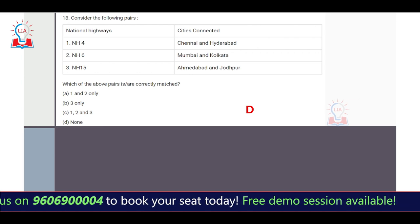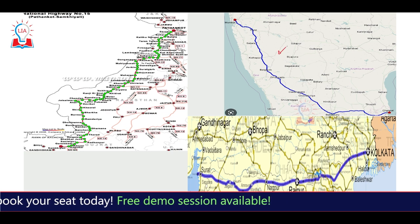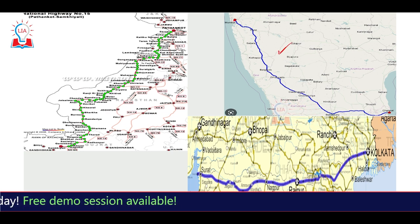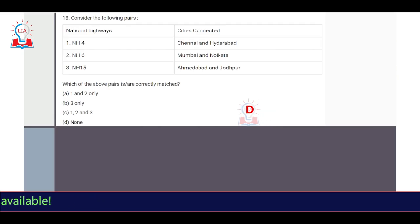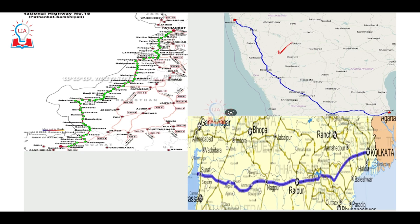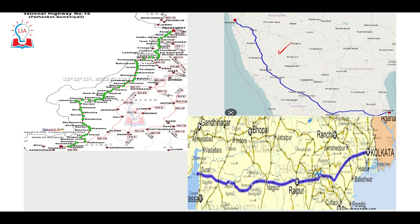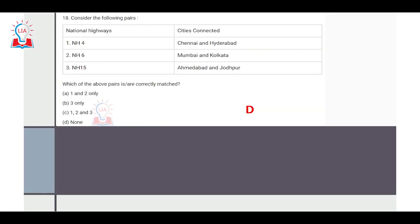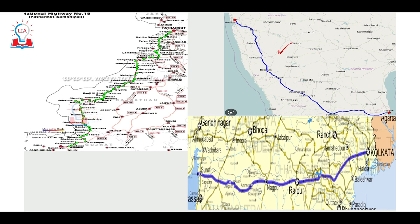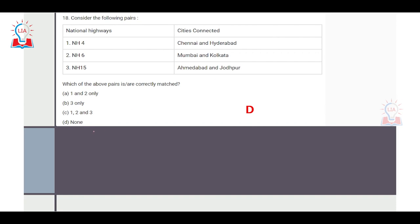The last question is about national highways and the cities they connect. NH4 does not connect Chennai and Hyderabad — it connects Mumbai to Chennai. NH6 does not connect Mumbai and Kolkata — it connects Surat to Kolkata, linking Gujarat to West Bengal. NH15 does not connect Ahmedabad and Jodhpur — it connects the Pathankot region in northern India to the Rann of Kutch region in Gujarat. All three statements are incorrect, so the correct answer is D.